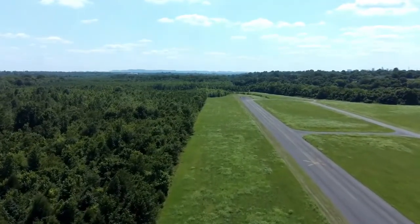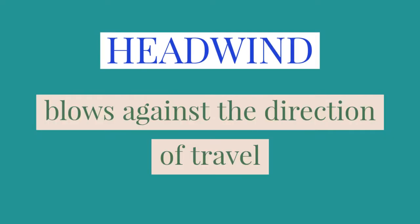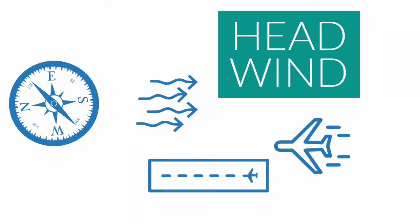From an aircraft perspective, two types of winds are essential: headwind and crosswind. Headwind is when the direction of the wind is against the direction of travel. For example, if you are traveling towards north and the wind is coming from the south — against your direction of travel — then that wind is called headwind.